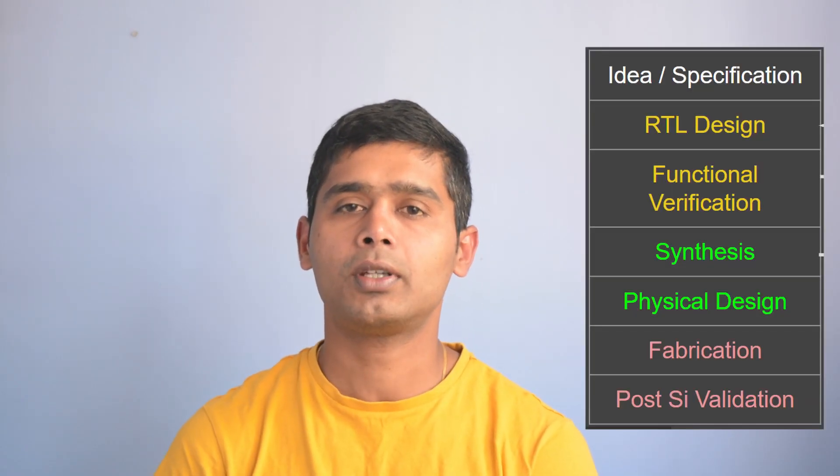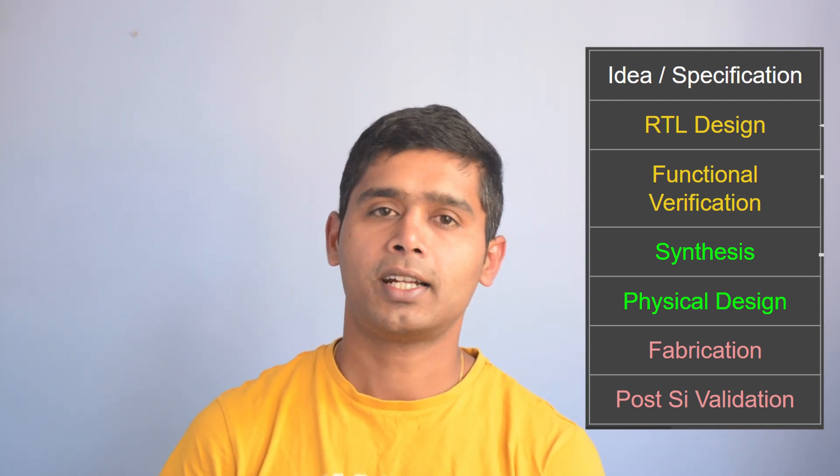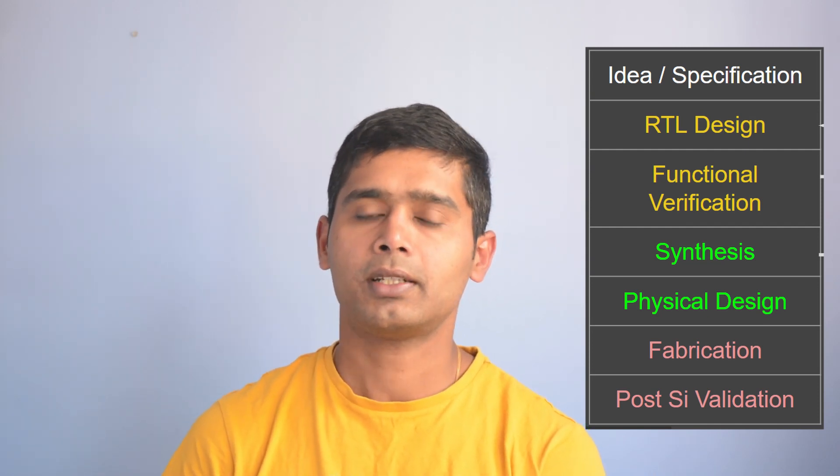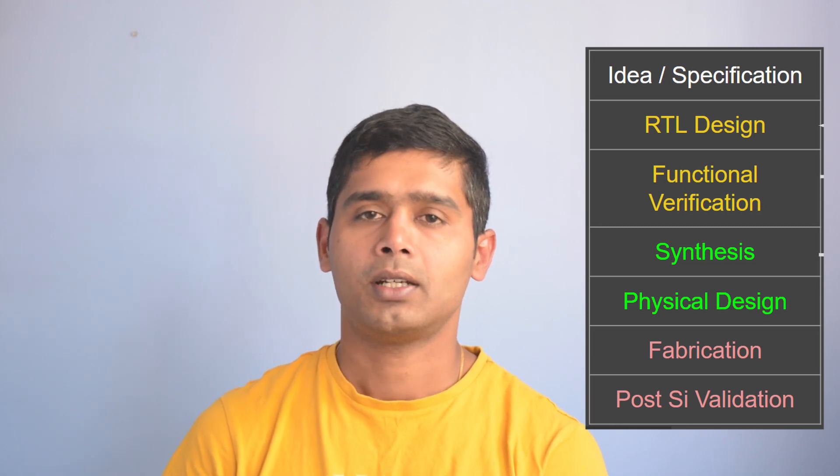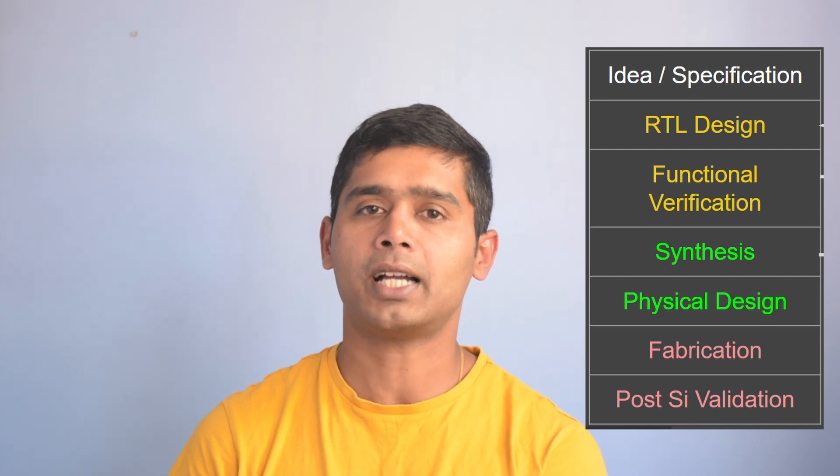Here is a simplified diagram showing all the processes in designing and manufacturing an IC. It involves architecture specification, RTL design, functional verification, synthesis and physical design, IC fabrication, and post-silicon validation. If you are not familiar with these steps, I would recommend you to watch the 30-minute video titled 'IC Design Process: A Beginner's Overview to VLSI Technology,' linked in the i-button and in the description below.